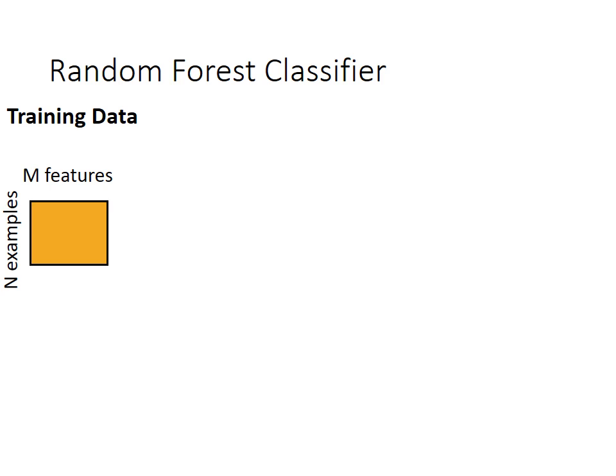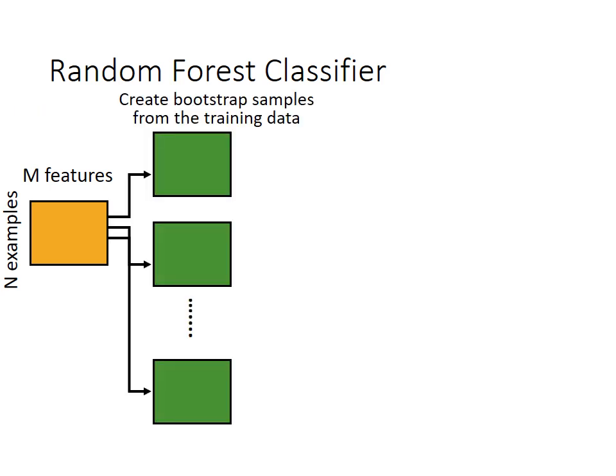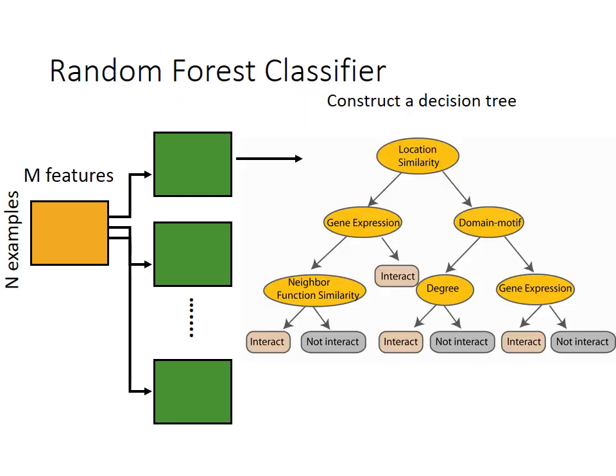For example, suppose there are n number of students and each student's information is given through m features, such as the age, name, and roll number of the student. First, create a bootstrap sample from the training data by randomly selecting with replacement. Once you have the bootstrap samples, the next task is to construct a decision tree from each bootstrap sample.